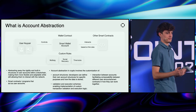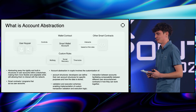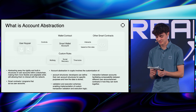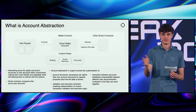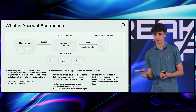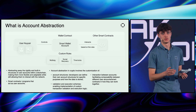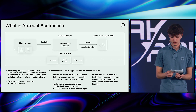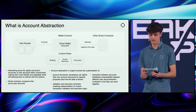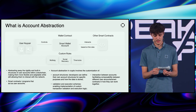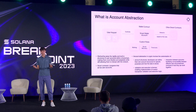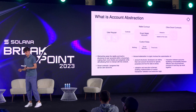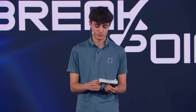Account abstraction is a very complicated concept that many people don't know about. To explain it, I think it's helpful to give a comparison between wallets you're used to today and account abstracted wallets. A wallet you're used to today, like on your phone or as a browser extension, consists of just a key pair — a private key and a public key. This private key has a seed phrase of 12 or 24 words, and it's a single point of failure. If you lose your seed phrase or it gets compromised, you basically lose your funds.